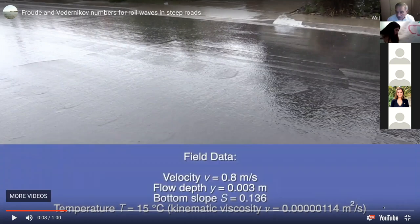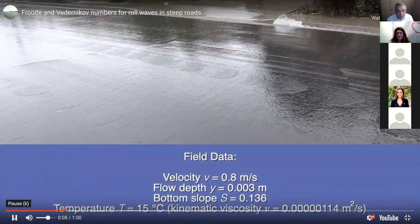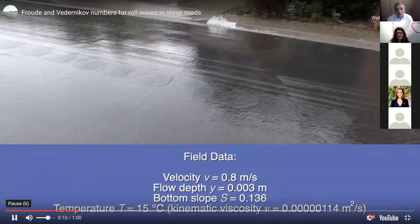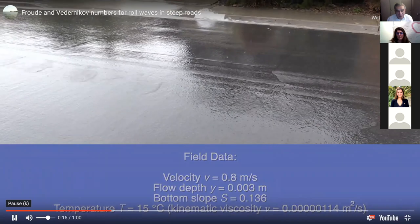We have the field data: velocity estimated at 0.8 meters per second, flow depth of three millimeters, bottom slope of 0.136 — a huge bottom slope — and temperature of 15 degrees. We then calculate the kinematic viscosity for 15 degrees, the Reynolds number, the Darcy-Weisbach friction factor under Glacius's formula, and from that we get the Froude number of 5.76 with a discharge exponent of 1.5.